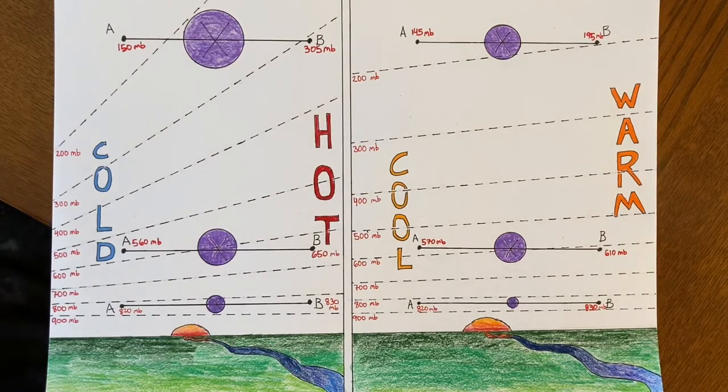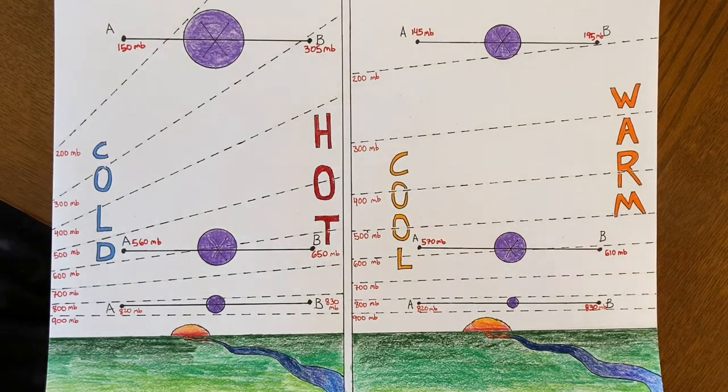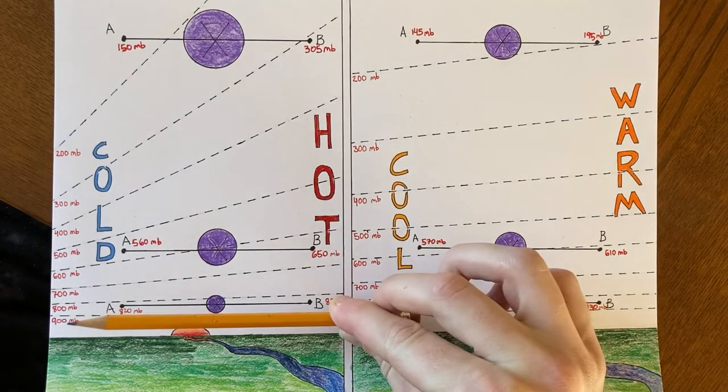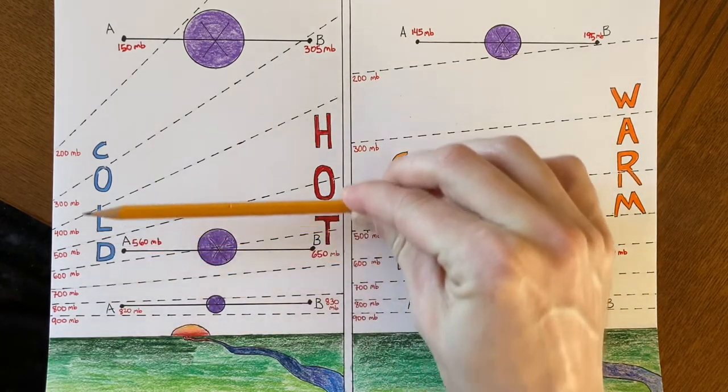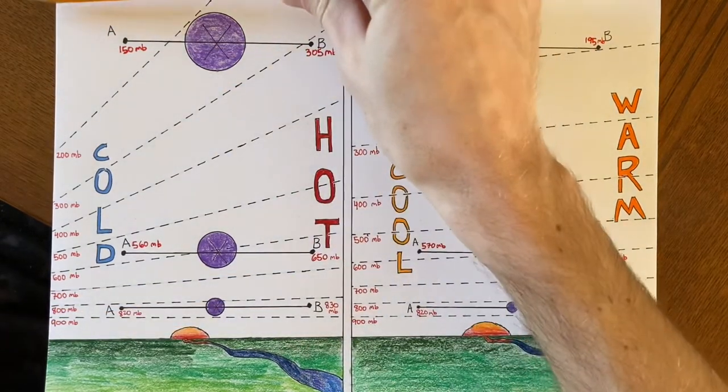All right, what is the jet stream and how does it work? Let's review a couple of things about the atmosphere. Generally atmospheric pressure decreases the further up you go. It's highest at the surface and decreases with altitude.